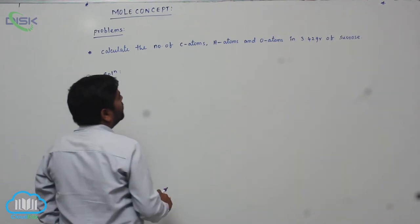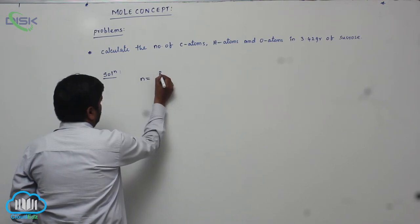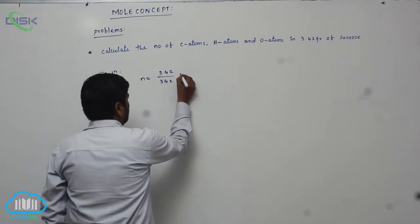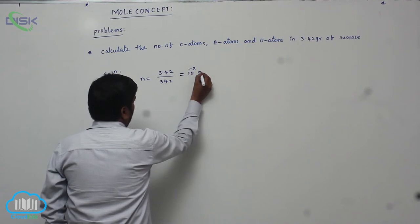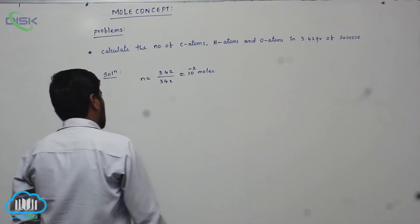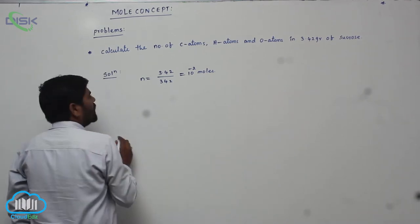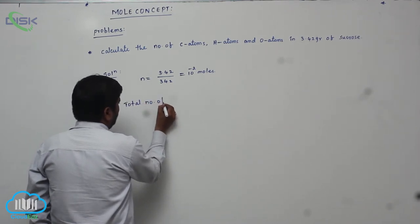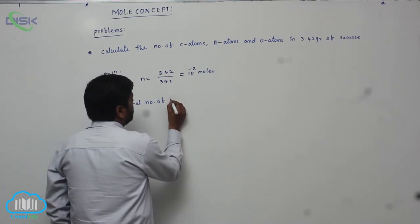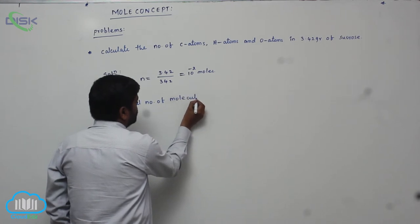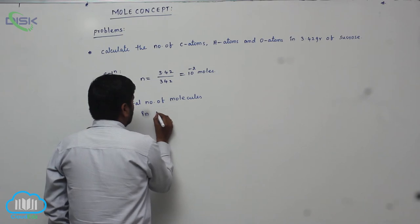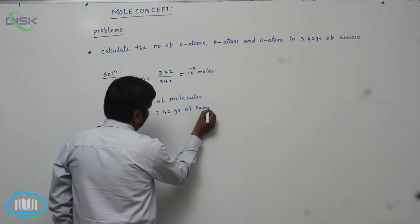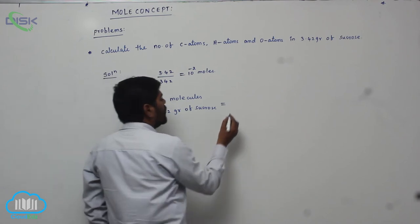Number of moles equals 3.42 grams divided by 342, which equals 10 power minus 2 moles. Now, total number of molecules in 3.42 grams of sucrose equals number of moles,